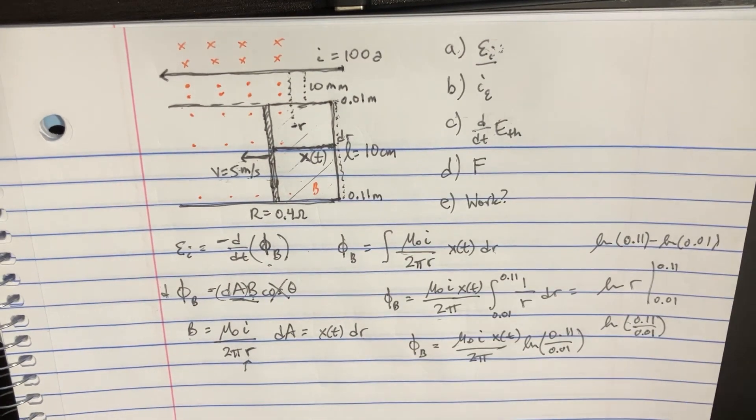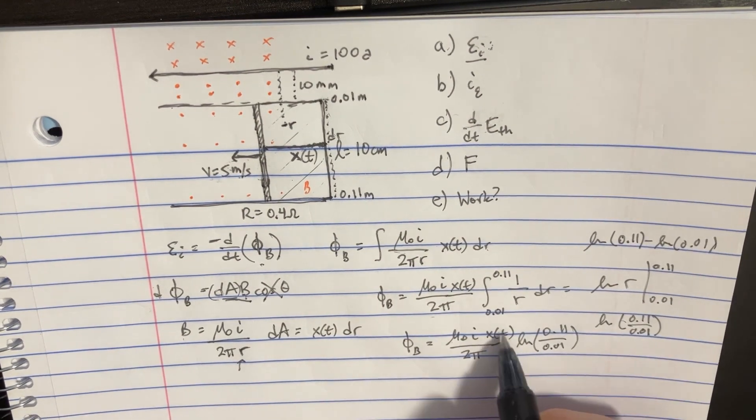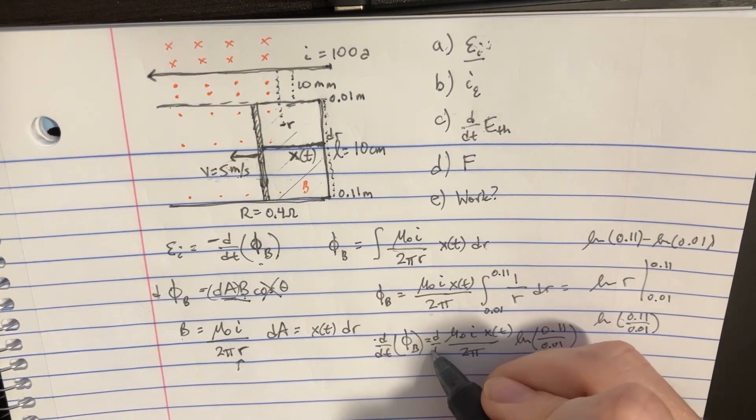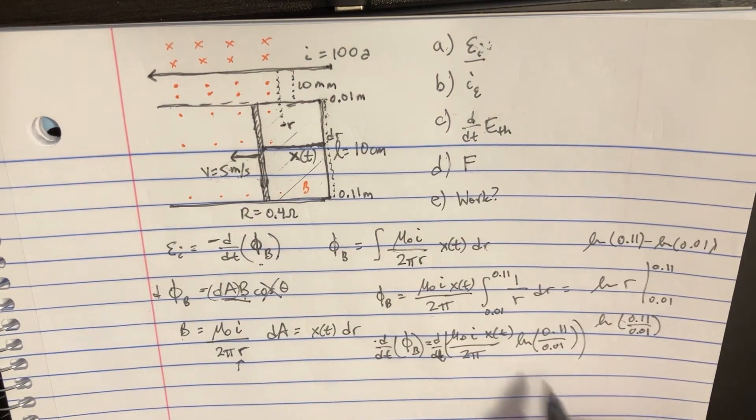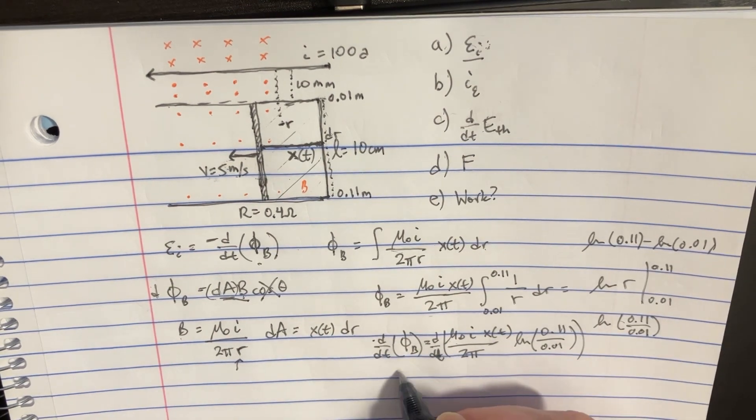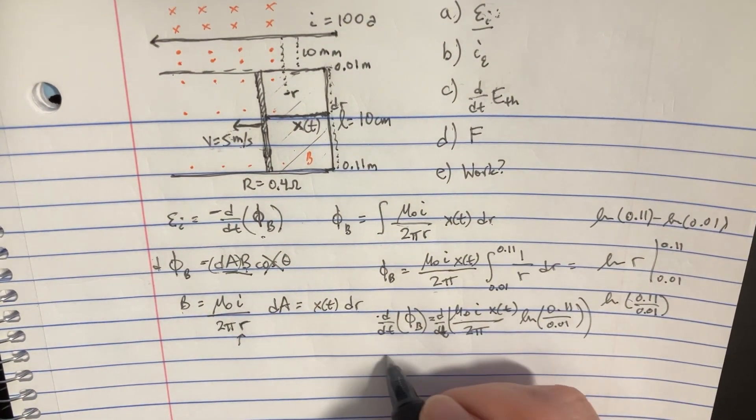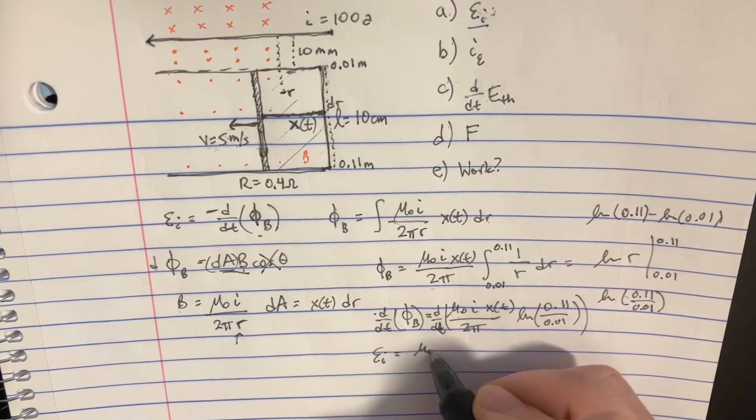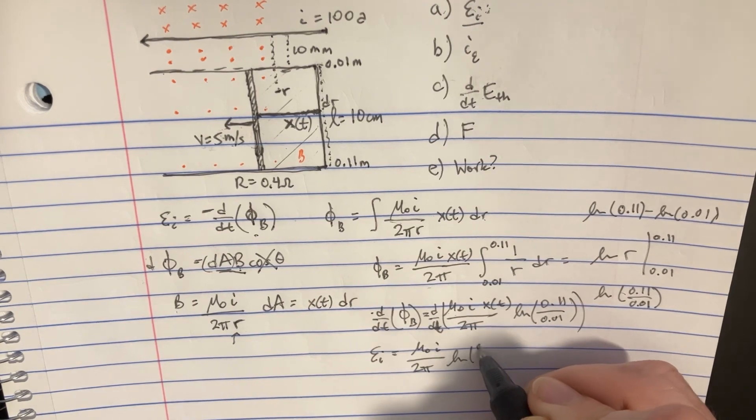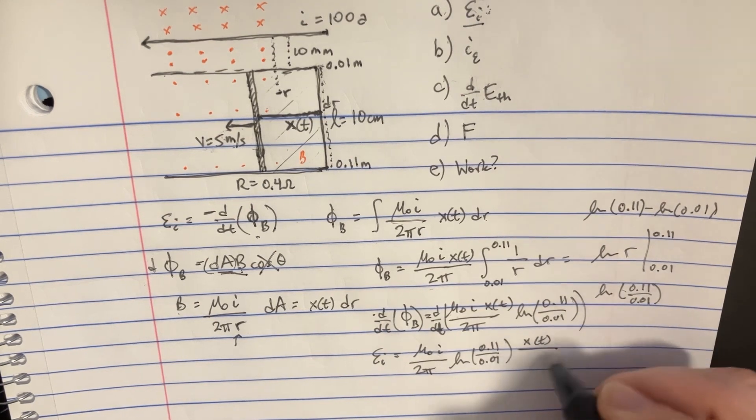We actually need to take the time derivative of this. So it's very handy that we have the x of t there, because the time derivative of that flux, if we were to take the d over dt of all this, all this stuff is constant. So we really just pull that out of the derivative, and we're going to get that the derivative here, which is going to be the induced emf, is equal to mu naught i over 2 pi times ln of 0.11 over 0.01. And here comes the derivative, d x of t over dt.